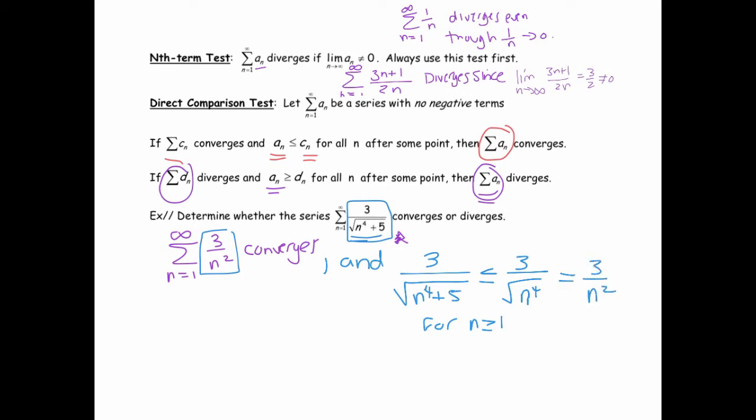So ultimately, the terms inside of the series we're analyzing, one by one, are going to be less than, when lined up next to the ones, the terms of 3 over n squared, they're going to be less than or equal to all those. And we know that this series 3 over n squared converges, so that implies, so this all implies that that converges as well.